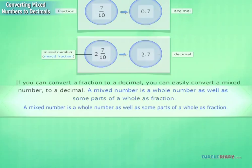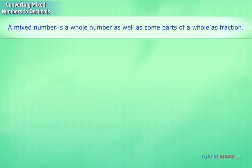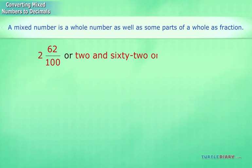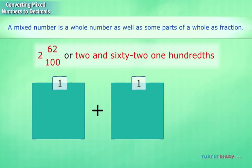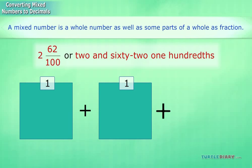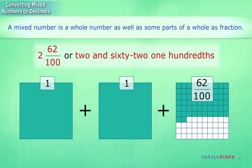For example, 2 and 62 hundredths, or 2 and 62 one-hundredths, means there are two whole parts and an additional 62 out of 100 parts.